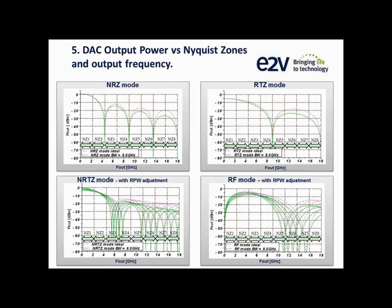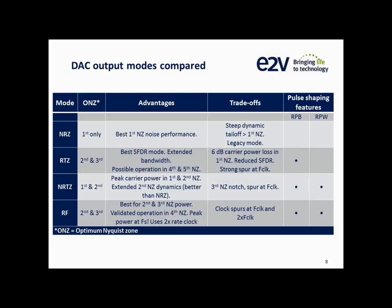On slide eight, there is a table comparing the different output modes. The ONZ column indicates the optimum Nyquist zone for each output mode. For example, if you want to work in the first Nyquist zone, NRZ mode is a good choice, and NRTZ can also be used. The table gives a good overview of the optimal Nyquist zone for each mode, the advantages of each of the four modes, the trade-offs to be aware of, and the pulse-reshaping features available depending on the mode.